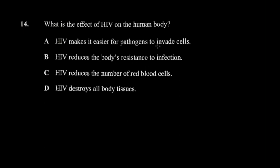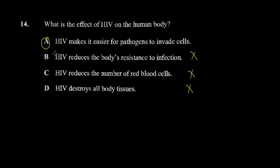Question 14 asks about the effect of HIV on the human body. The options include: HIV makes it easy for pathogens to invade cells; HIV reduces the body's resistance to infection; HIV reduces the number of red blood cells; HIV destroys all body tissues. HIV does not affect red blood cells and doesn't destroy all body tissues. It suppresses the immune system, setting up conditions for pathogens to invade cells — that is the correct answer. Be careful, as the choices are tricky.